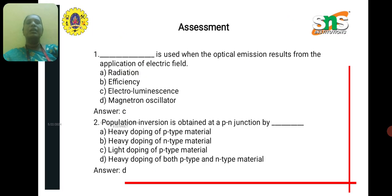Now the assessment. DAS is used when the optical emission results from the application of electric field. The answer is electroluminescence. And the population inversion is obtained at the P-N junction by heavily doping of both P-type and N-type material. Thank you.